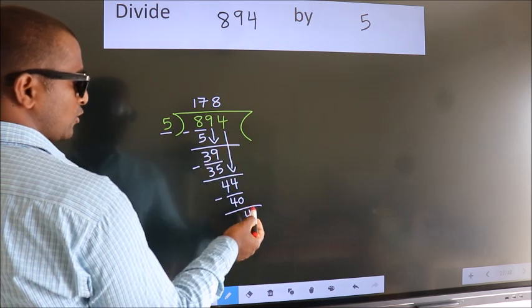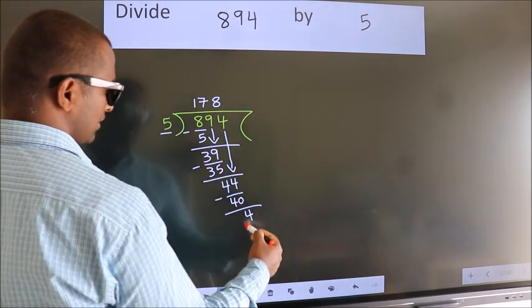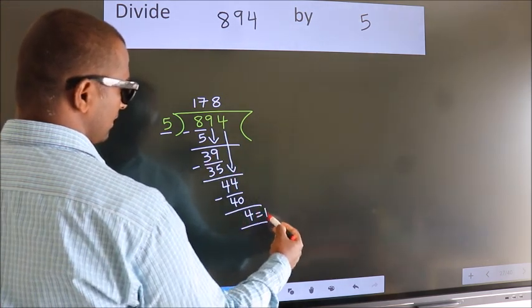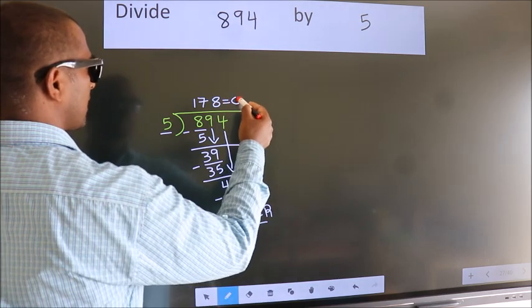No more numbers to bring it down. So, we stop here. This is our remainder. This is our quotient.